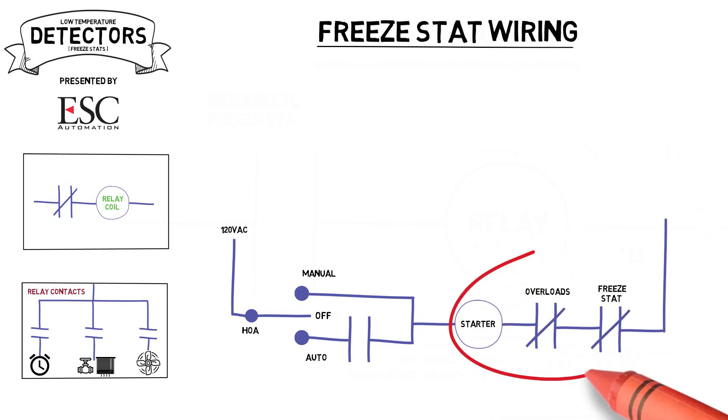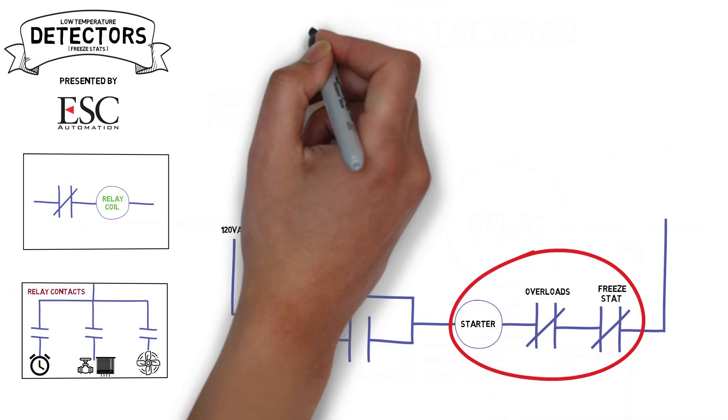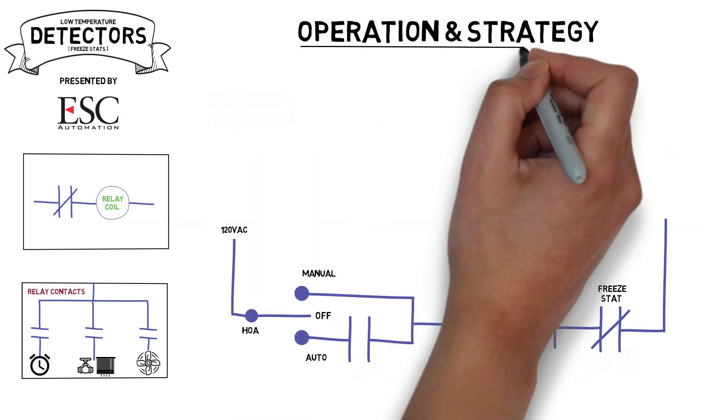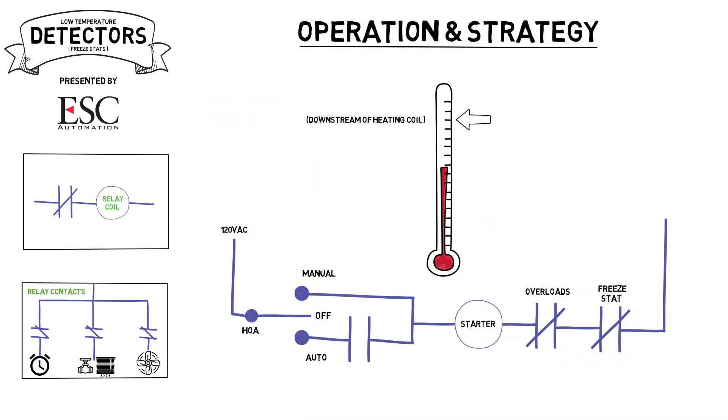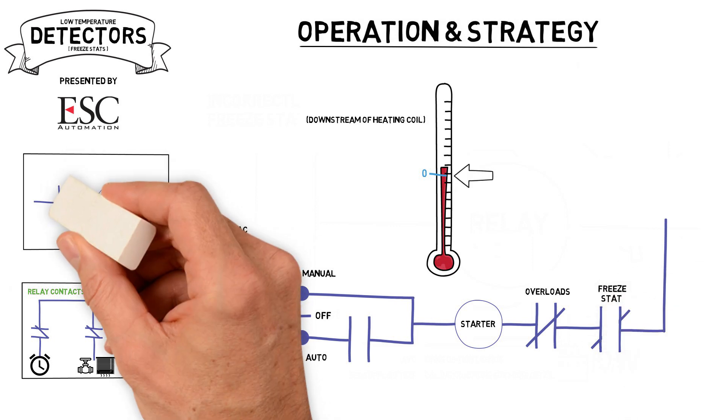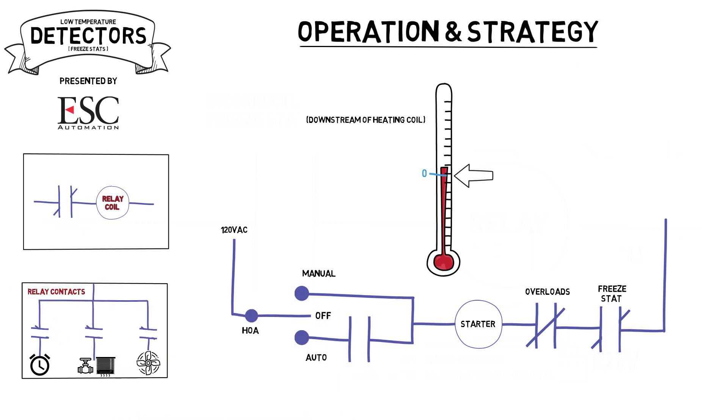Once installed, wired, and set point adjusted, usually so that the freeze stat is set to trip at only a few degrees above freezing, if any one foot length of the element is subject to temperatures below the temperature set point, the freeze stat will open its contacts and de-energize the relay, regardless of the temperature being sensed by the remainder of the element.